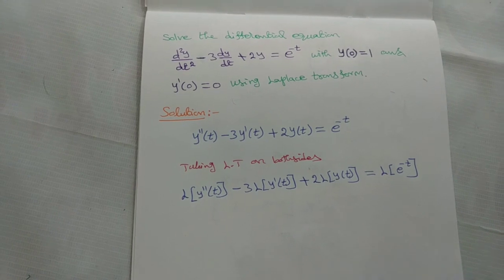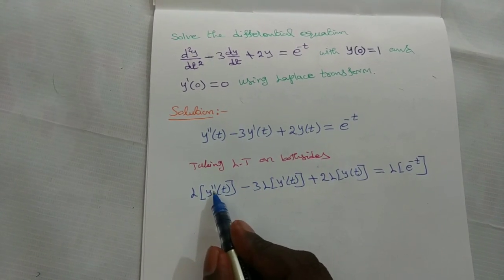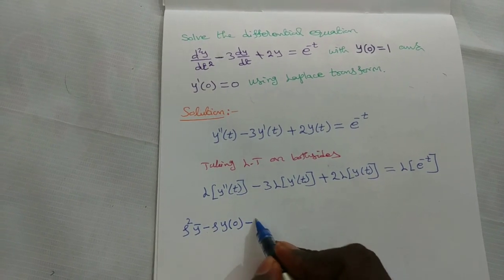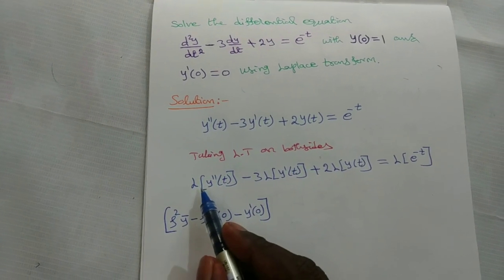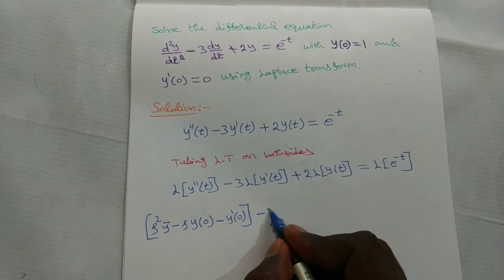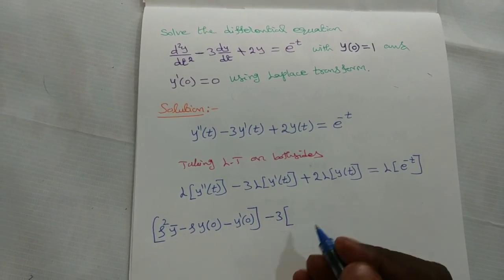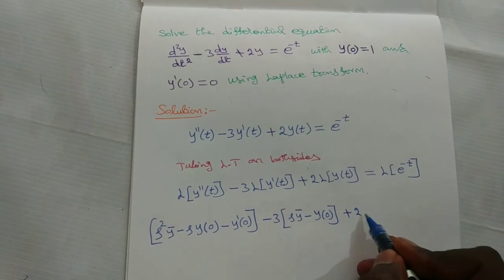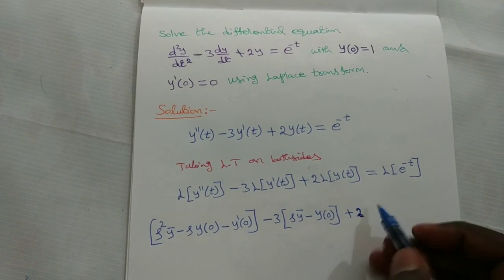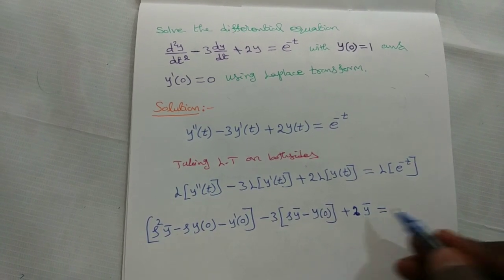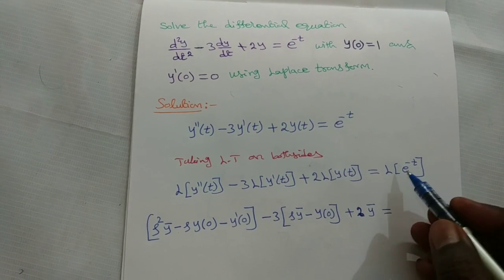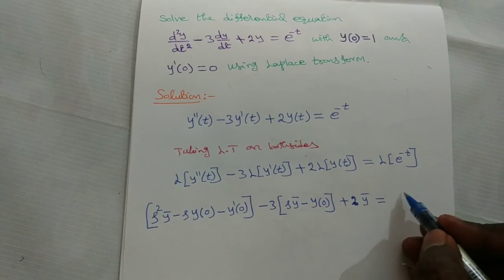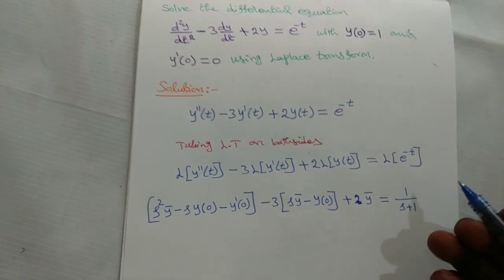By the formula, the Laplace transform of y double dash of t is s² y-bar minus s·y(0) minus y'(0). Then minus 3 into the Laplace transform of y dash of t, which is s·y-bar minus y(0). And 2 into the Laplace transform of y of t, which is y-bar. The Laplace transform of e power minus t uses the formula: L{e^(−at)} = 1/(s+a), and since a is 1, this gives 1/(s+1).